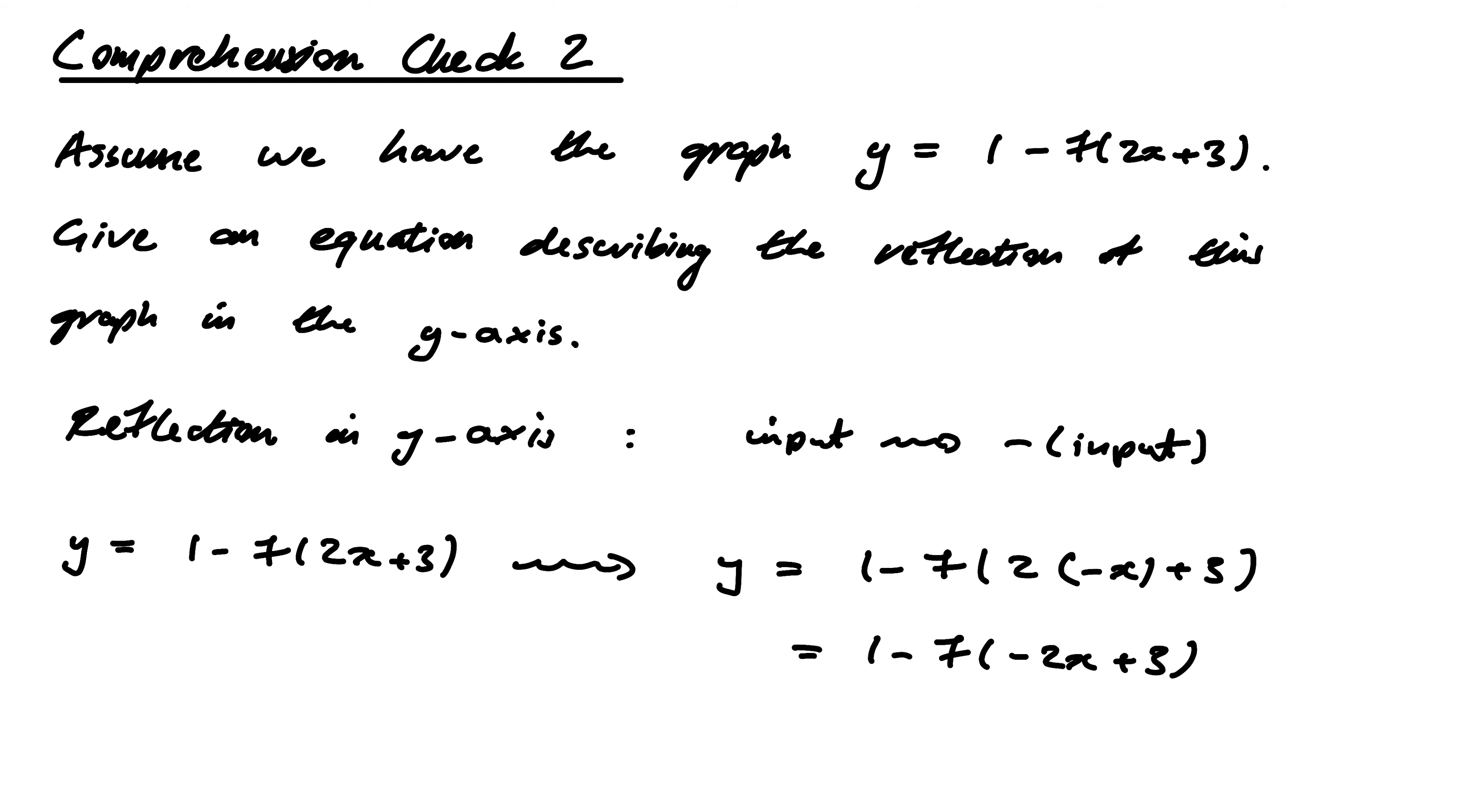Again, as a warning, this 2x - 3 is being input into f, sure, but it's not the overall input of the function. The overall input of the function is x, so that's what gets changed.